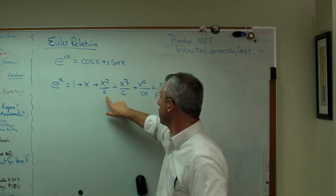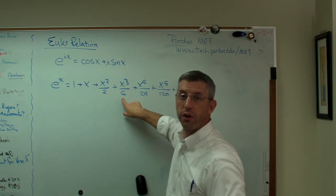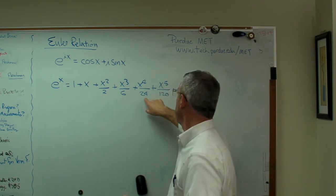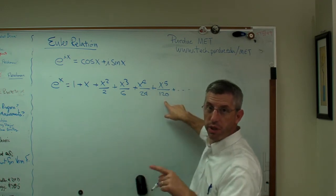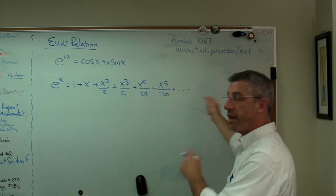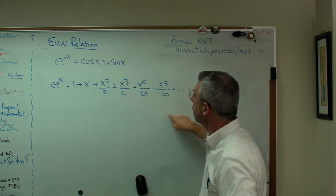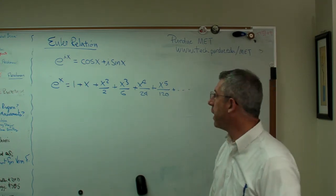1 factorial is 1, 2 factorial is 2, 3 factorial is 3 times 2, that's 6, 4 times 3 times 2 is 24, 5 times 4 times 3 times 2 times 1 is 120, and so on. So those are the factorials. This has been known for a long time.